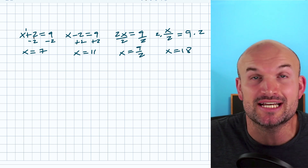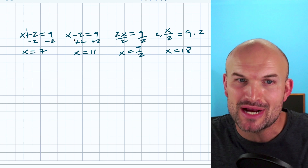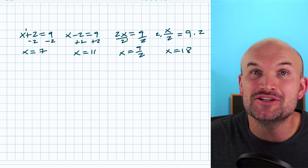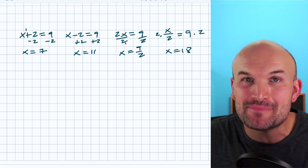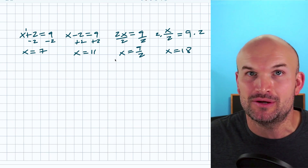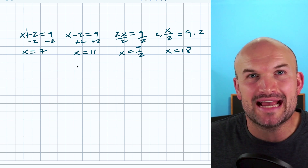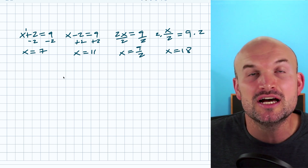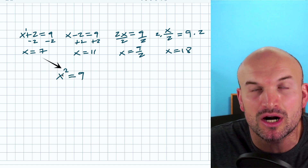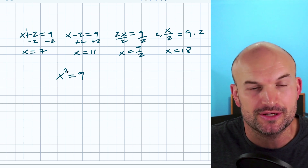In this example, all I did to undo adding two, I subtracted a two on both sides. To undo subtracting two, I added a two on both sides. To undo multiplying by two, I divided by two on both sides. And to undo dividing by two, I multiplied by two on both sides. So let's take a look at a quick quadratic and see how we would use our inverse operations to solve for x. This is a quadratic because the power of our variable is now being raised to two rather than one.